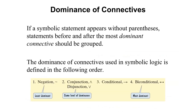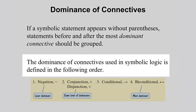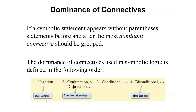Now if we see symbolic statements that have one or more connectives and no parentheses, we use the level of dominance of connectives to group the statements. The statements before and after the most dominant connective should be grouped. The dominance order is: negation is the least dominant; conjunction and disjunction have the same level of dominance; and the most dominant are the conditional and biconditional connectives.